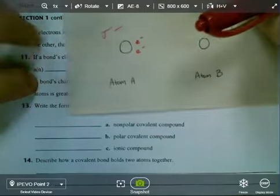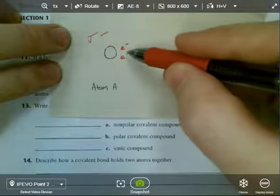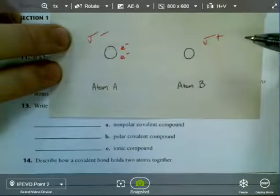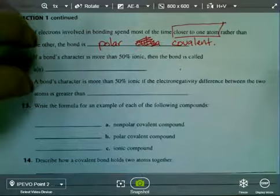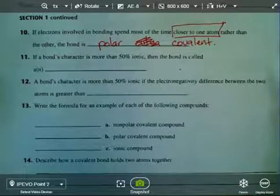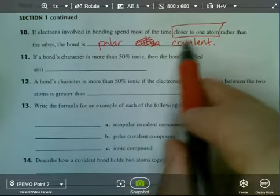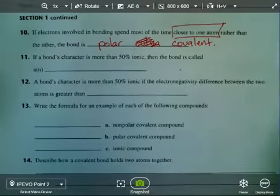If it was going to be a nonpolar covalent, these electrons wouldn't be over here closer to one atom or the other. They would be right smack dab in the middle. We call that uniform distribution of electrical charge, but we don't have that when the electrons are closer to one atom rather than the other.